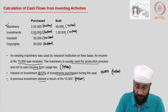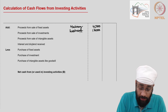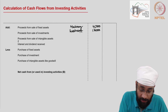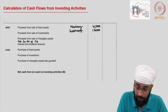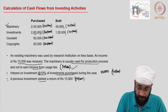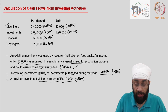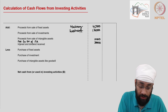Then you have inflow from rent or usage — fee for use of fixed asset — 10,000. Then interest and dividend received: interest on investment 20,000 and another interest of 10,000, so total 30,000. I'm going to write 30,000 against that line.